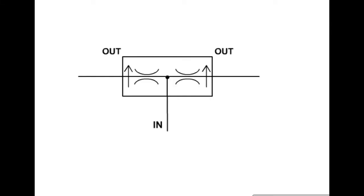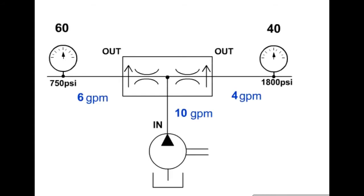A proportional flow divider is a device that divides flow into two or more flow parts. By dividing the flow, a single pump can be used to operate multiple circuits at the same time.